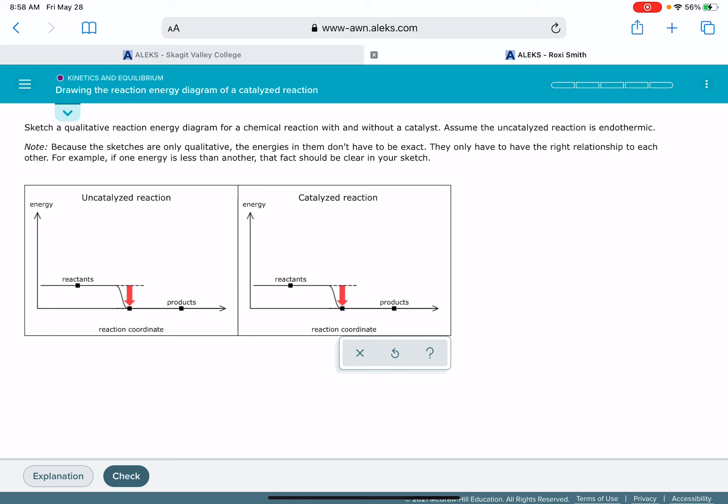Then next, we want to place our products on these diagrams. And remember, this is endothermic. So we want our products to be higher in energy than our reactants. And they could be anywhere, it's not giving us information about how endothermic it is. So there's not going to be a right position for these products. The only thing you want to look out for is making sure that your products are the same.